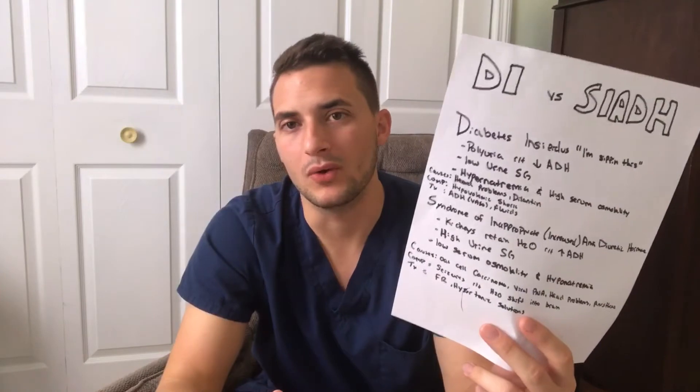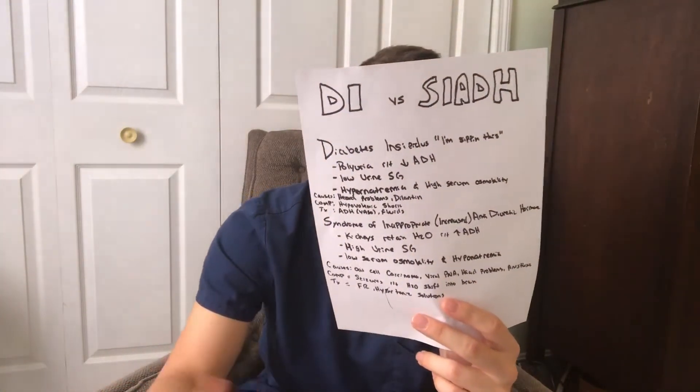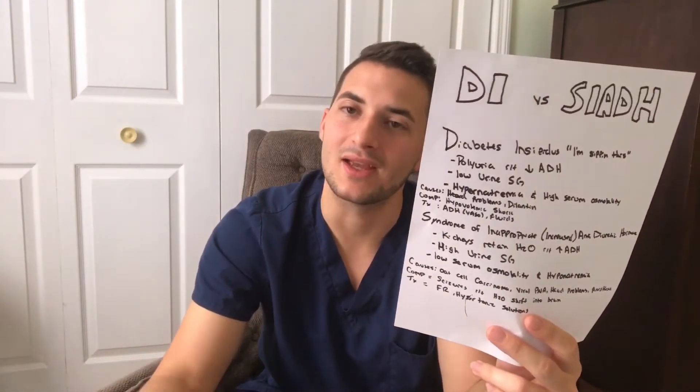What is the treatment? We have to give them antidiuretic hormone — a lot of times it's DDAVP — to help them start to retain urine and stop putting it out so much. The other thing is fluids; we have to fill up the tank and prevent that hypovolemic shock.